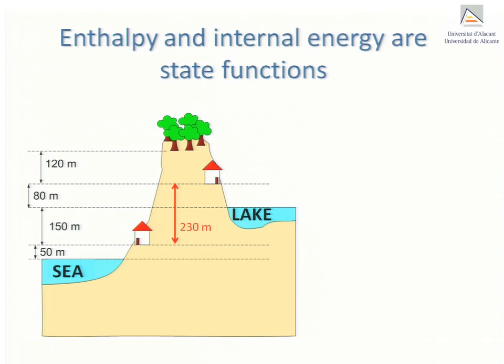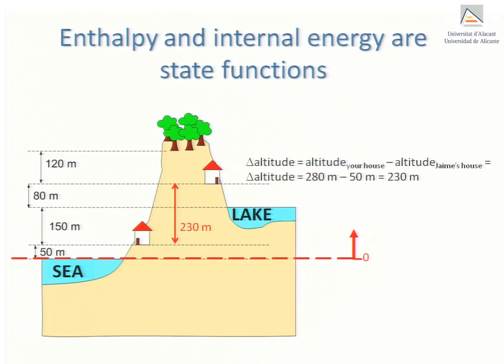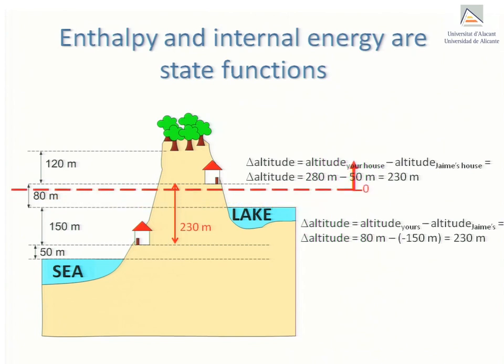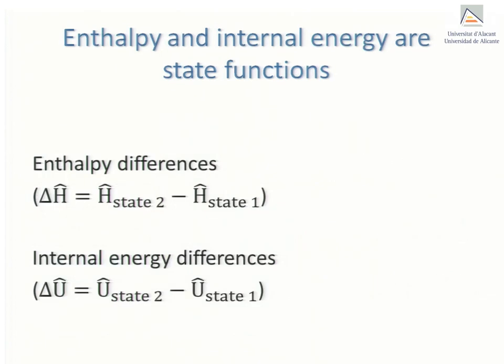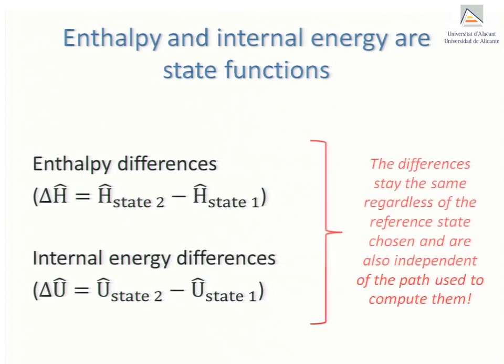Some paths might be longer and others shorter, but what matters is the difference in altitude. Hence, the difference in altitude between the houses in the drawing is 230 metres, regardless of whether the zero or reference point is taken to be at sea level, at the surface of the lake, or at the edge of the forest. This self-evident truth immediately carries over to enthalpy and internal energy differences. The enthalpy and internal energy differences between two distinct states stay the same, regardless of choice of reference state and is also independent of the path chosen to compute them.